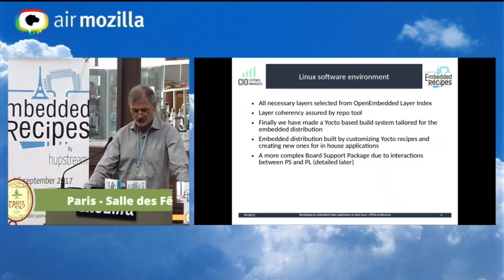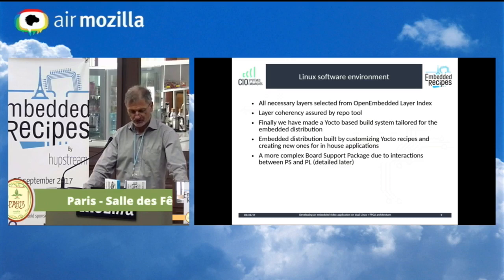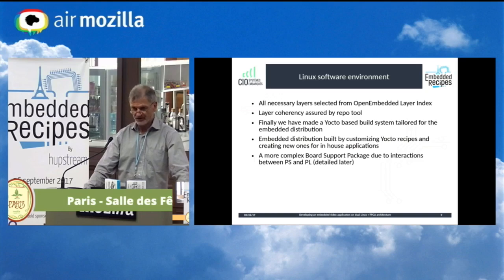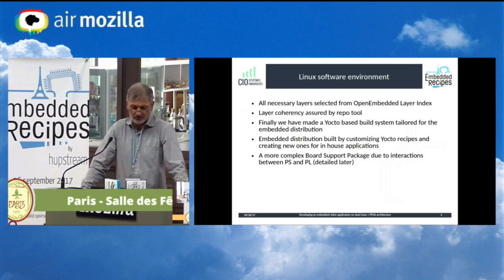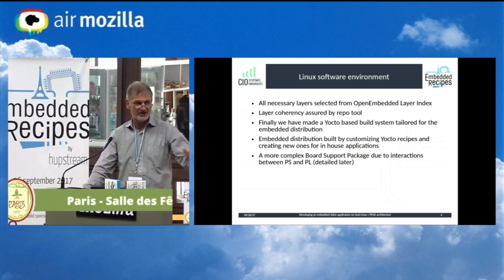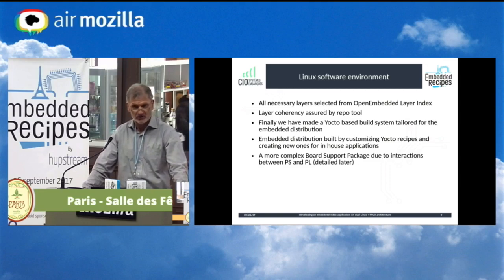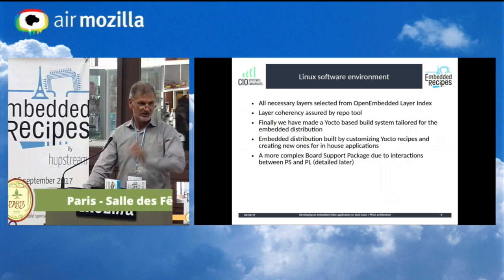The main thing to note is that the meta-xilinx layer — which is mainly a BSP layer — is more complex than with other machines, because of the interaction between the PS and the PL. I will detail later how Yocto and the BSP manage the interaction between the two parts of the architecture.